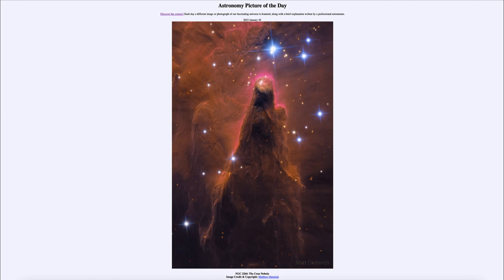Towards the peak of the Cone Nebula we see the region that is being pushed away by a very hot, massive star — which we don't actually see in this image, it would be off the top of the image — but the energy from that star as it pushes out its strong stellar winds will sculpt away at the material.